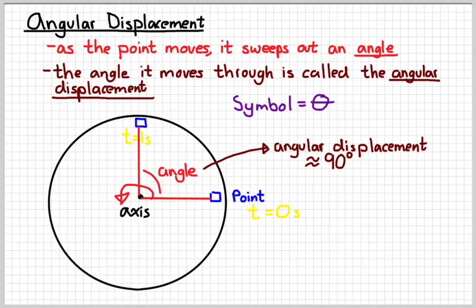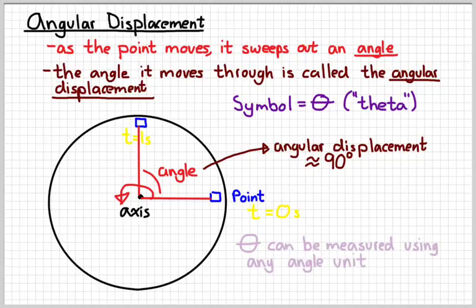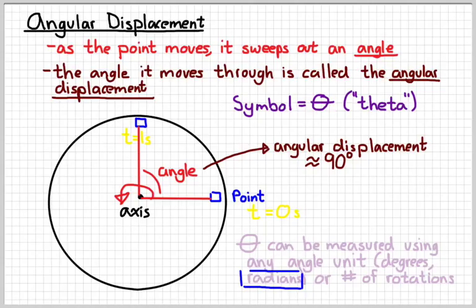The way that we symbolize this quantity is with the Greek letter theta. Theta is kind of like a zero with a horizontal line drawn through the middle of it. That represents an angle in math and science. Now we can measure that angle using any angle unit, such as degrees or number of rotations. But the one that's going to be preferable is the radian. Radian is what we're going to use to measure. And we'll see why here in just a second.